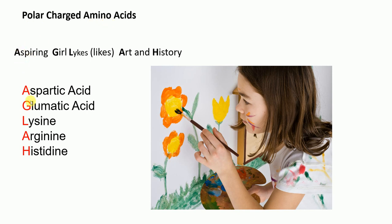So the mnemonic for polar charged amino acids is: 'An aspiring girl likes art and history.' A is aspartic acid, GURL is glutamic acid, LYX is lysine, ARCH is arginine, and history is histidine.